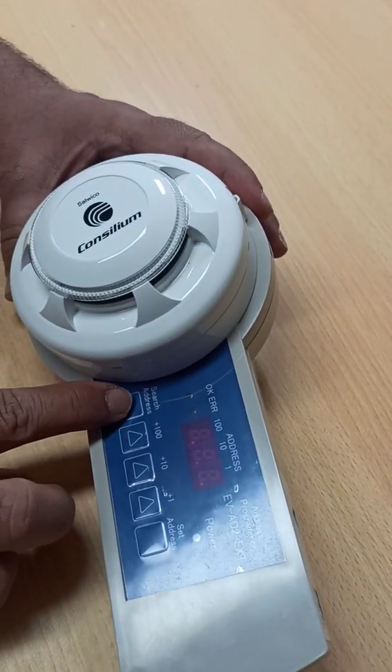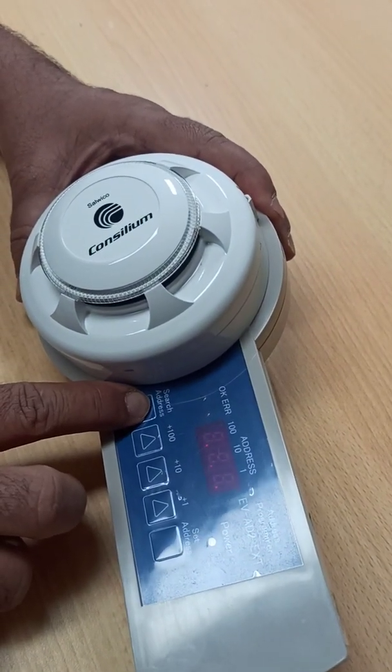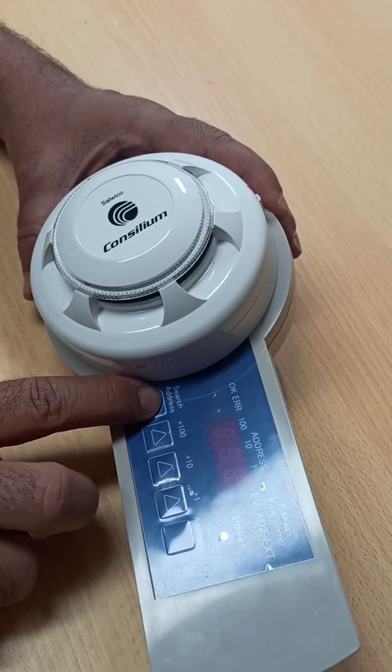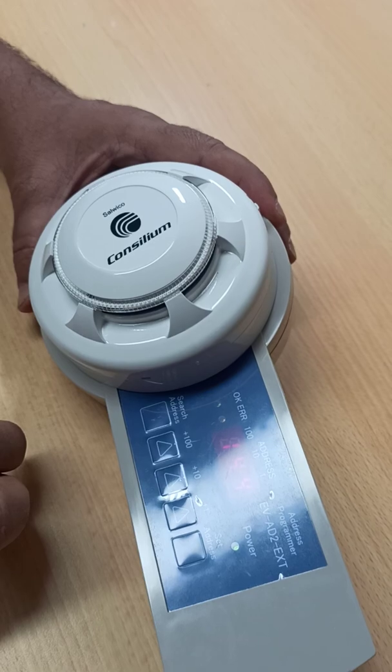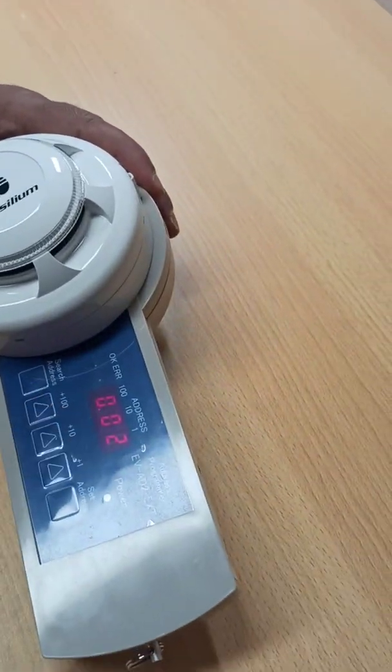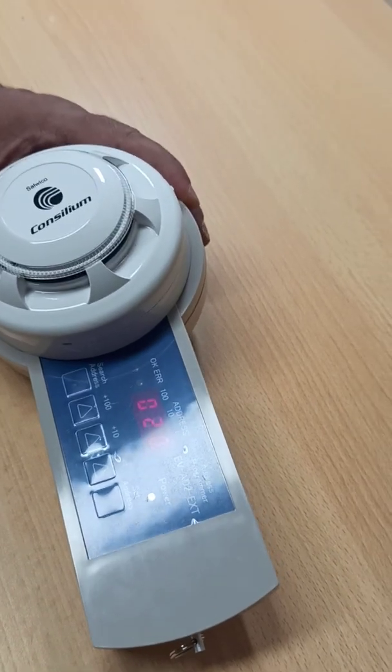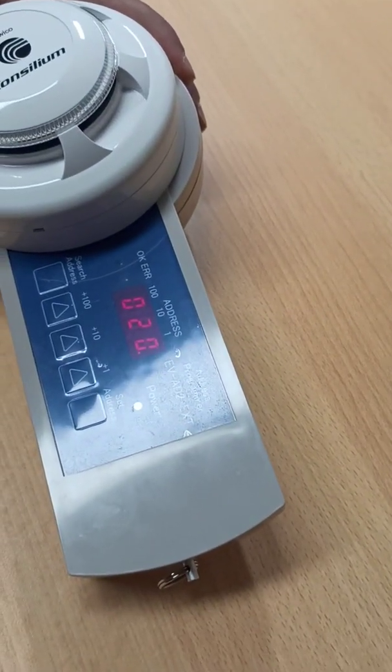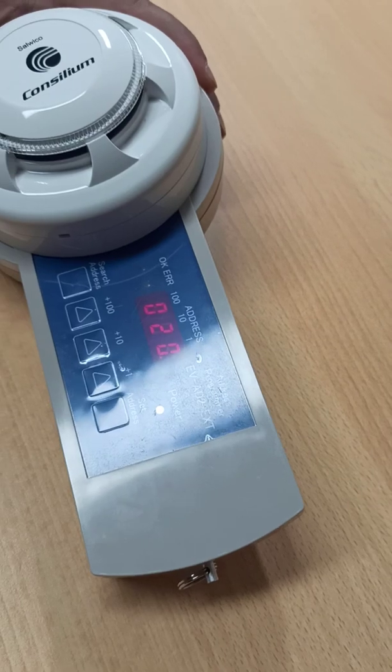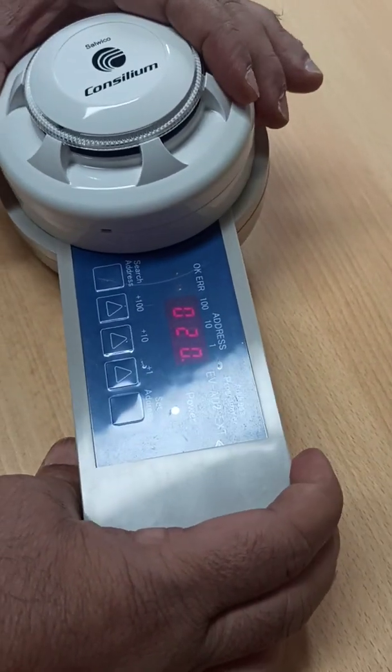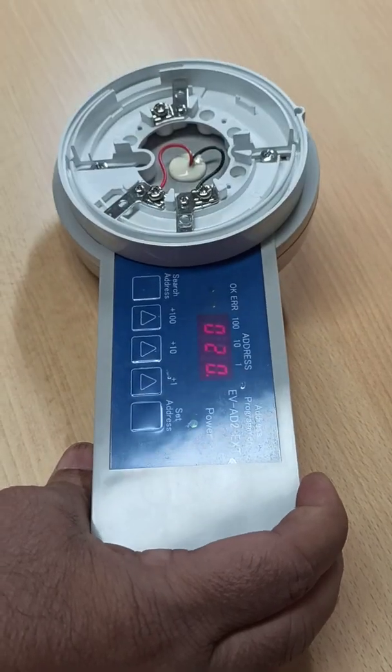Now again press the search address. See, now this is showing the address 20. So this fire detector address is 20 which was set by us few seconds before. So this is correct. One by one you can set them. Hope you got the idea.